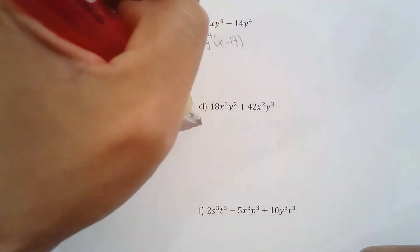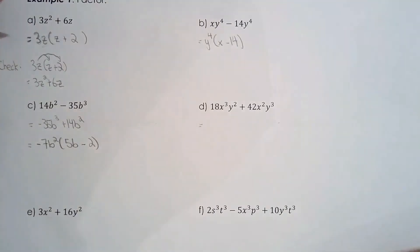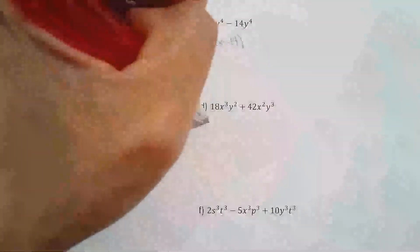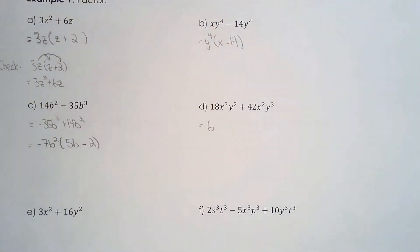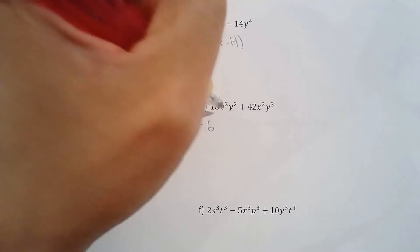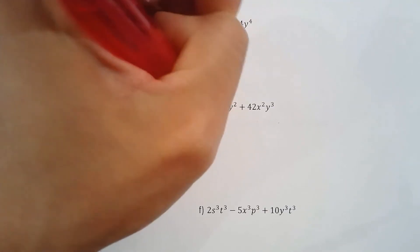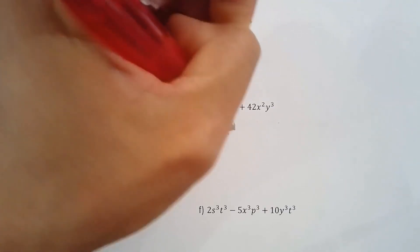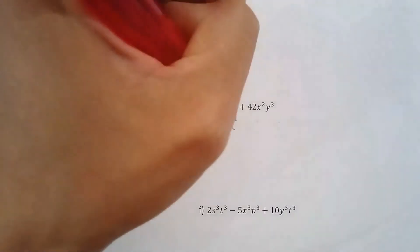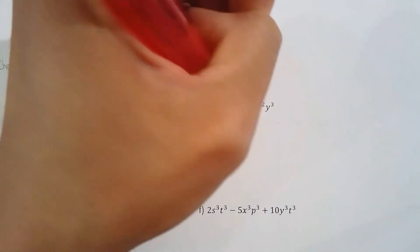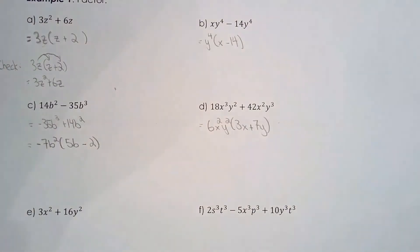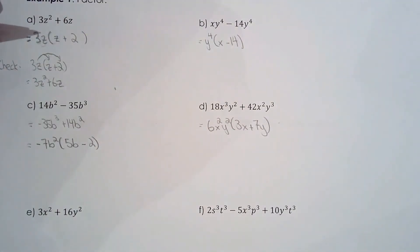Between 18 and 42, the greatest common factor is 6. We can take two factors of x and two factors of y from everyone, leaving one factor of x and one factor of y inside the brackets.